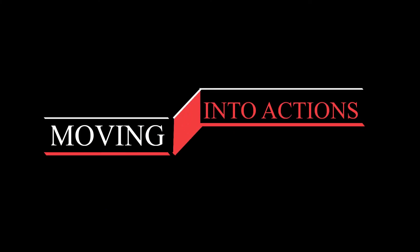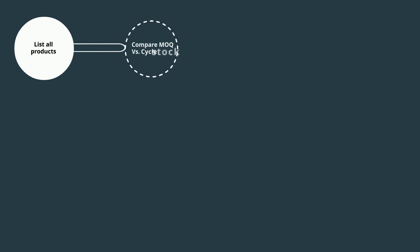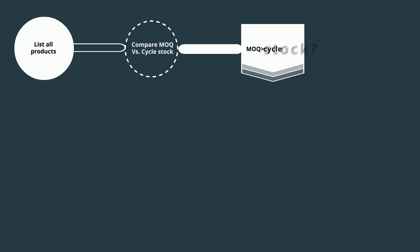Sometimes it's better for the company to stop producing some products. If you are working in the supply planning department, here are the actions needed: number one, list down all products under your portfolio; number two, compare the MOQ cover versus the maintained cycle stock.